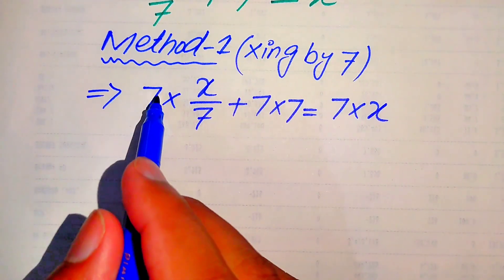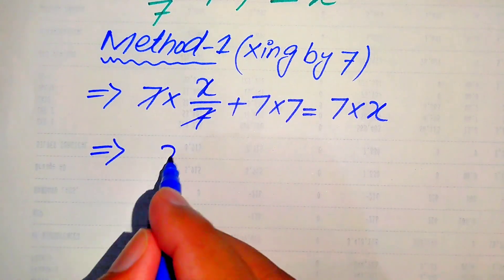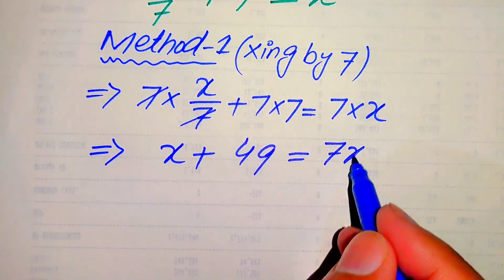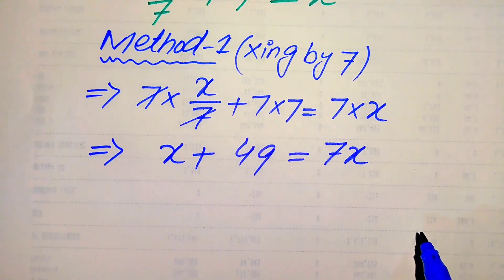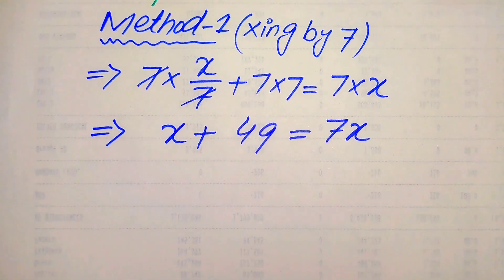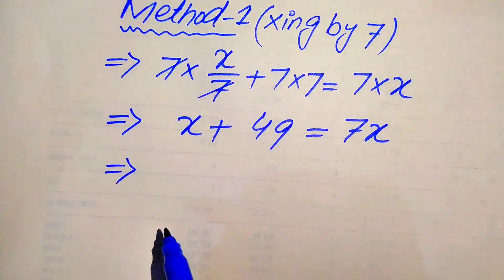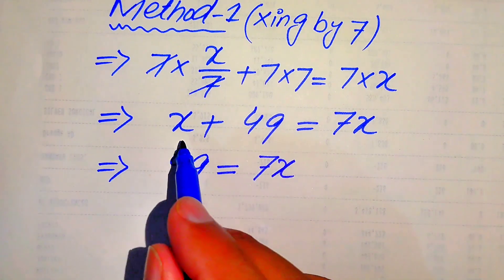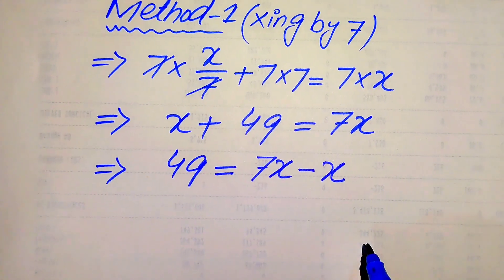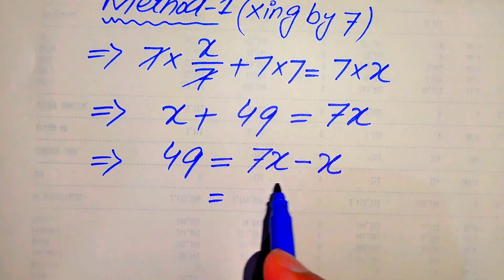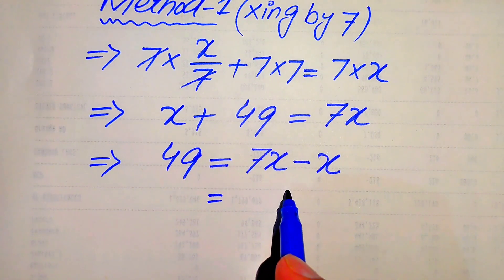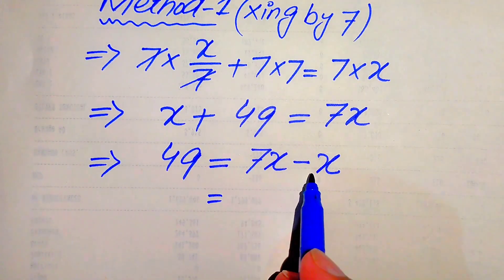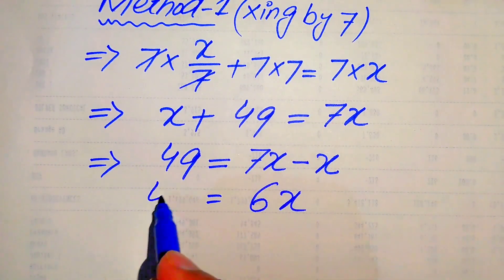This 7 is cancelled out by the 7, and we have x plus 7 times 7 equals 49, and 7 times x equals 7x. Now we move the variable terms to the right-hand side and the constant terms to the left-hand side, giving 49 equals 7x minus x. The coefficient of 7x minus x gives us 6x.